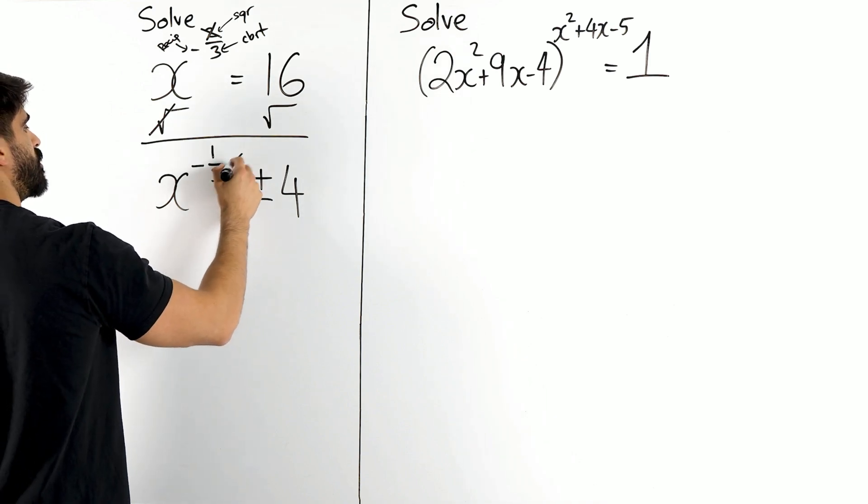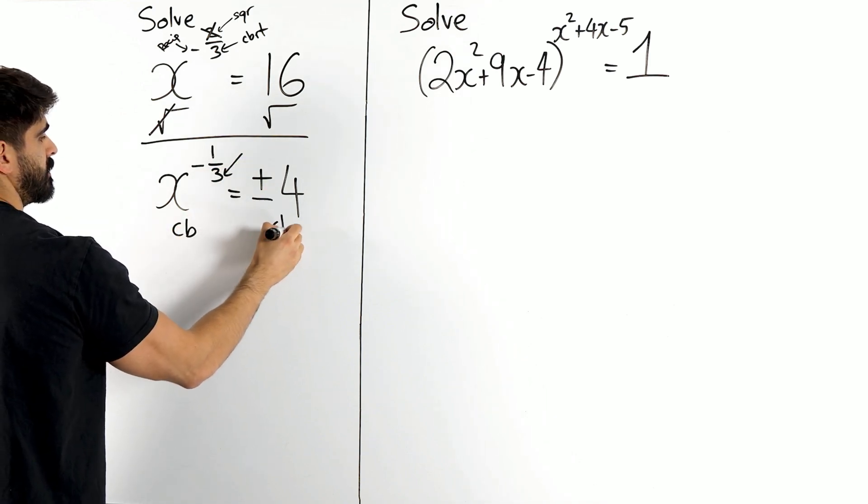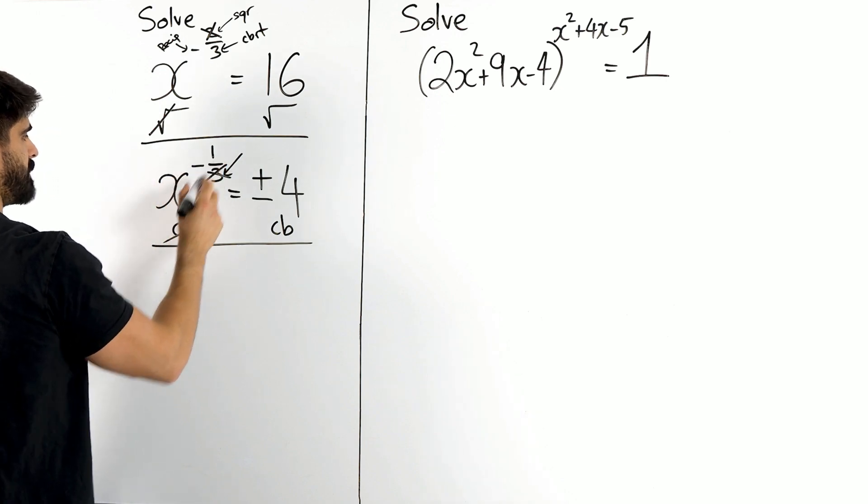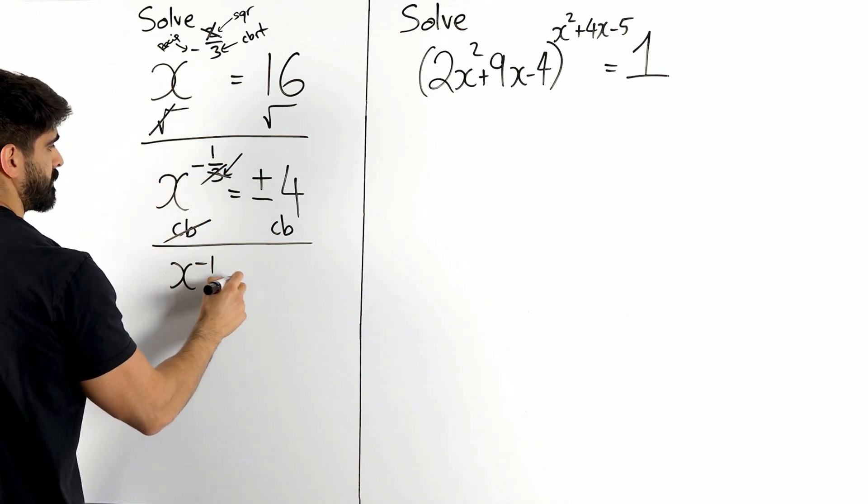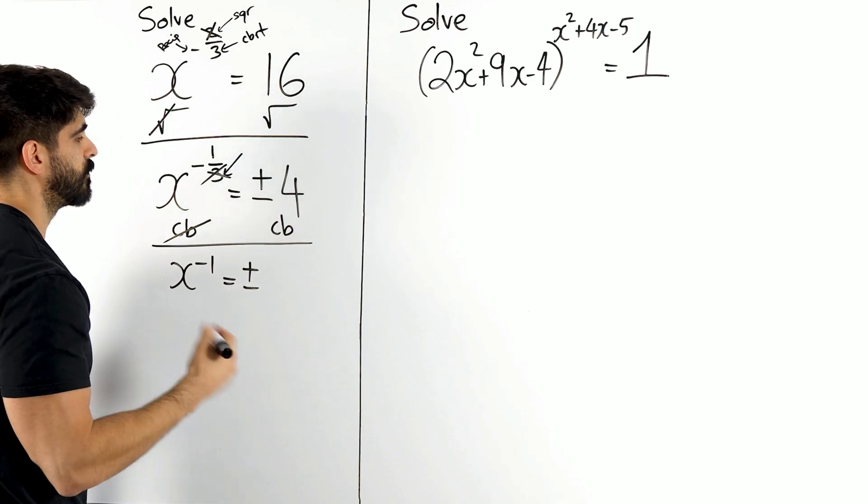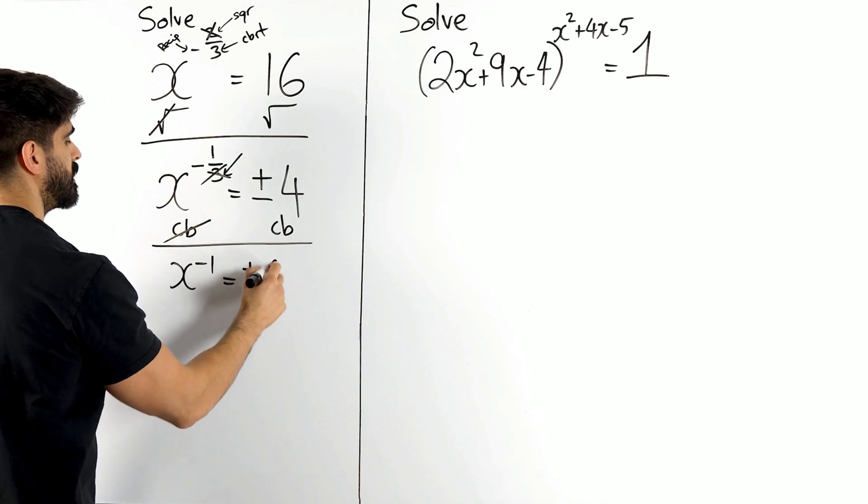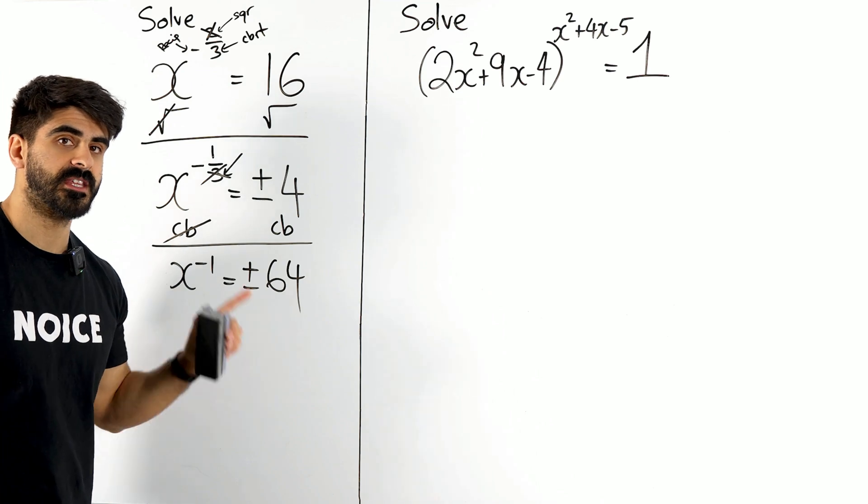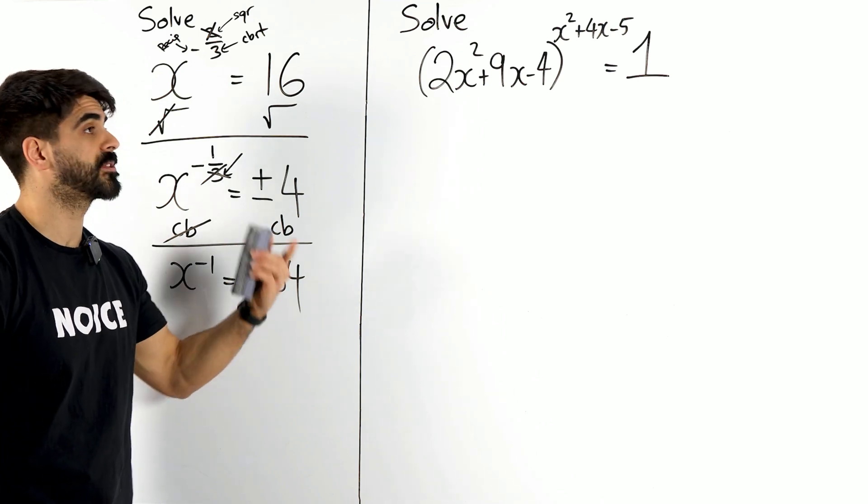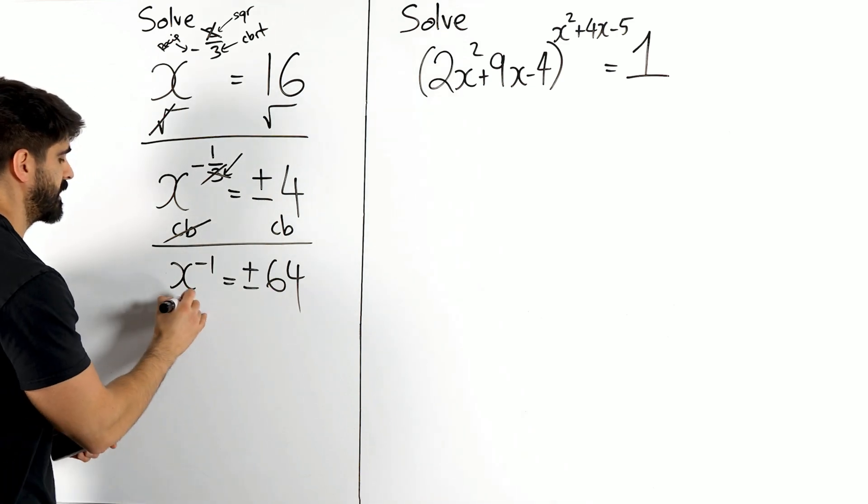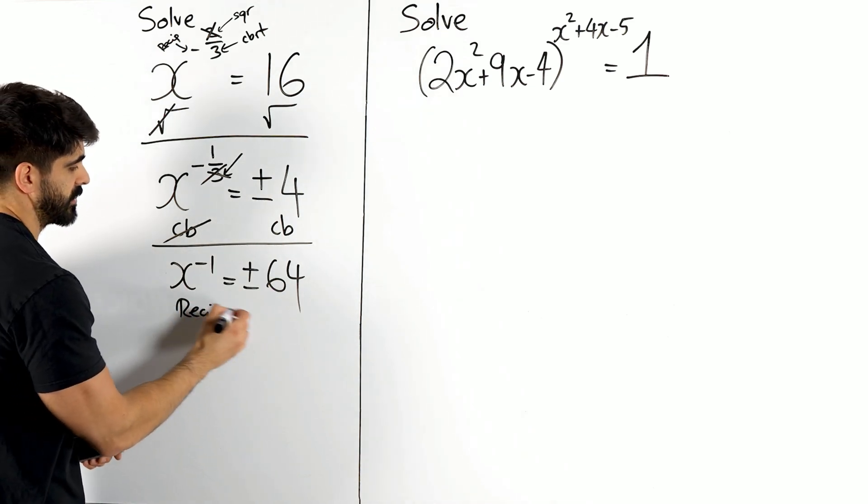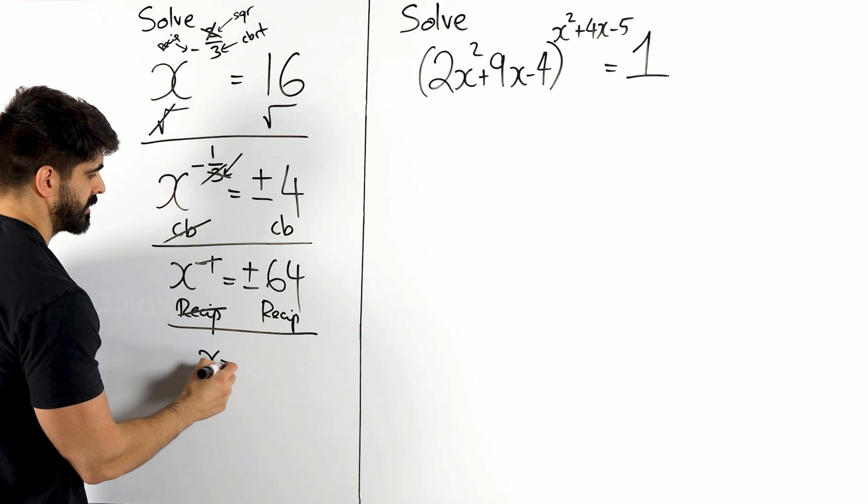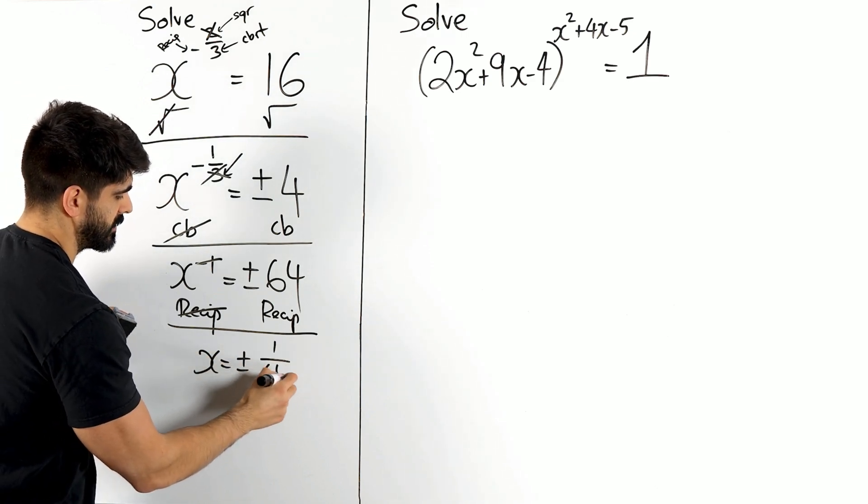Now we can do the opposite of this, which is to cube both sides. Or you could write power three if you want. X to the minus one now is plus or minus the cube of four. Four times four times four, four is 16 times another four, 64. Now that means reciprocate, remember what we just said, the inverse or the opposite operation to the reciprocal is to reciprocate again. Reciprocate just means one over. So that goes x is plus or minus one over 64.